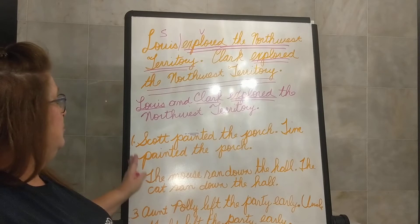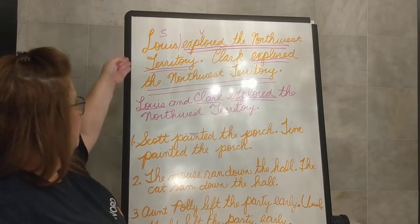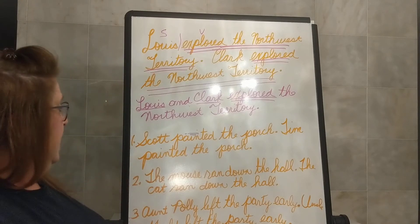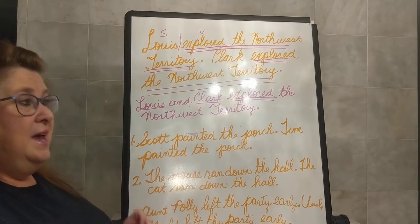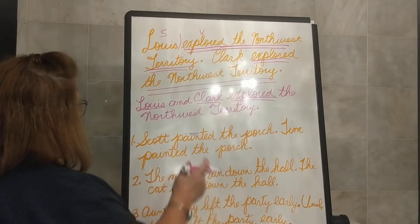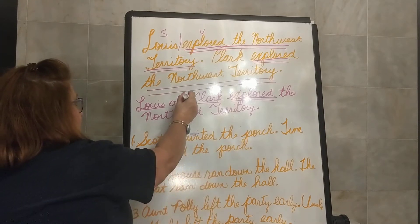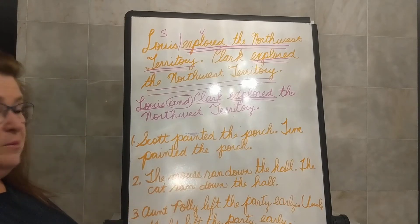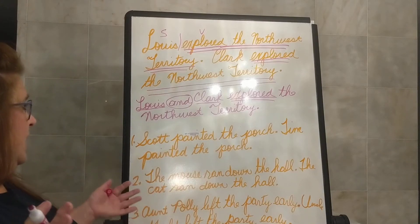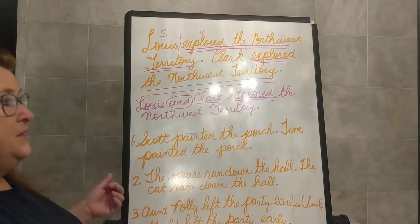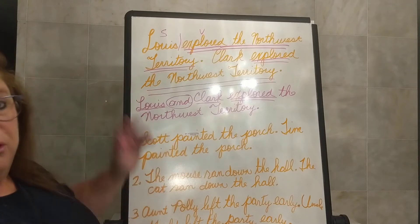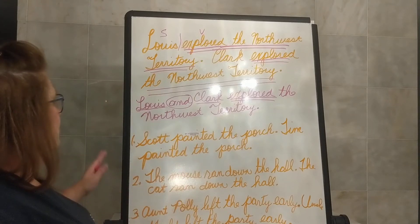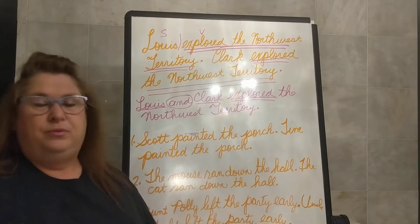Either way, it would be much smoother just to combine those subjects and have a compound subject. A compound subject is just a subject that is combined with a connection word, a conjoining word. You could say, let's say there was another person involved — Randall. We could say Lewis, Clark, and Randall.